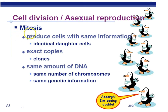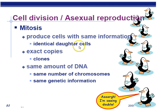Mitosis produces identical copies — genetically identical copies are called clones. These daughter cells have the same chromosomes and same genetic information. All cells in your body were produced by mitosis. You start with 46 chromosomes and end with 46 chromosomes. If you're talking about a different organism with, say, 12 chromosomes, all its cells would also have 12 chromosomes.